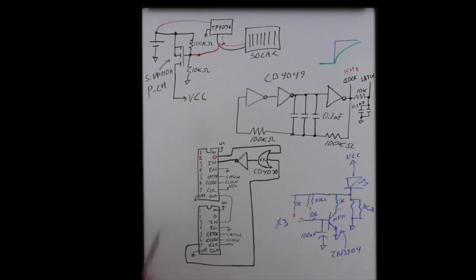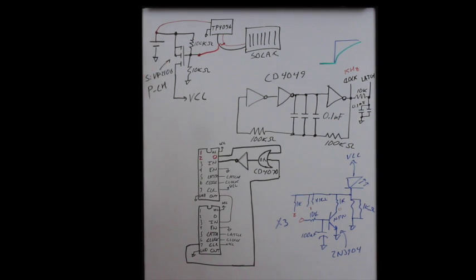We're monitoring one leg here of the solar panel and that's what kicks on this P-channel FET. So as soon as this gate here falls below the threshold, which is when it gets dark out, it'll pull this low and kick on this P-channel MOSFET here. And then we have VCC which is connected to everything else on the board.